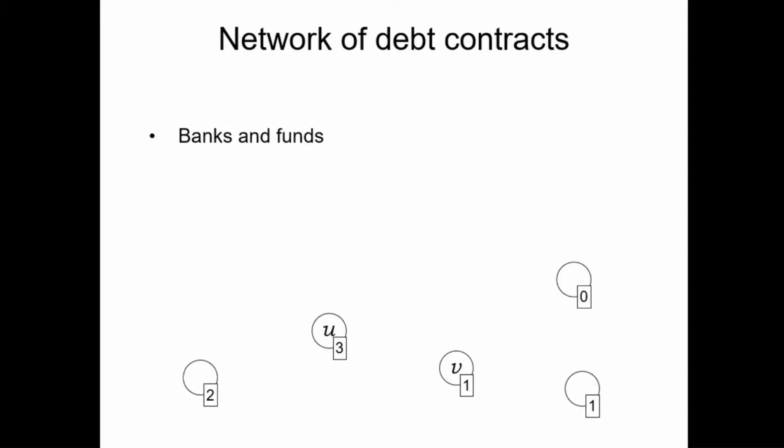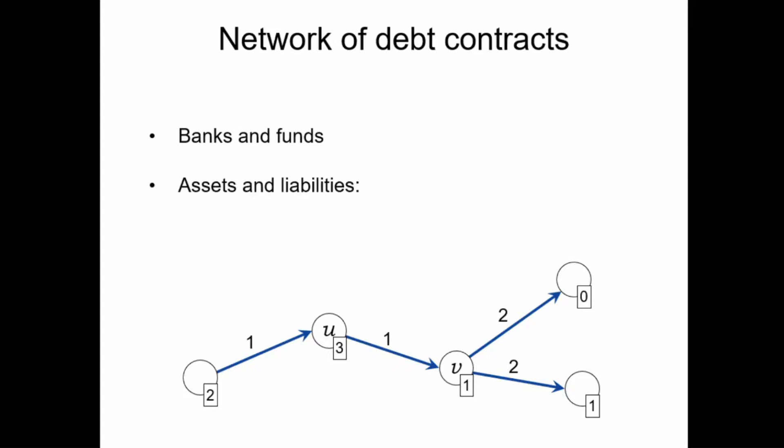The base model to study these systems, originally developed by Eisenberg and Noé, is actually quite simple. We do need to introduce some financial terminology for it, but it is just a very natural description of what happens in a network. We have some banks or nodes, and each bank has a certain amount of available money or funds in its possession, shown in little rectangles beside the node. These banks are connected by debt contracts — for example, bank U has to pay one unit of money to bank V. This naturally describes a specific amount of assets and liabilities for each bank.